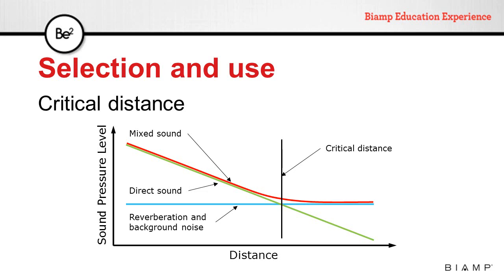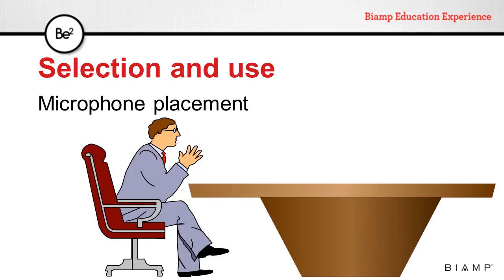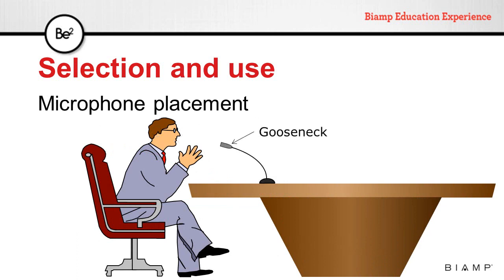If we place a microphone beyond the critical distance, it will only pick up noise. Taking distances into consideration, the best microphone we can pick is the headset — it's going to be the closest to the source and the farthest from the critical distance. If that's not a possibility, the next best choice is a gooseneck microphone, which will be a little farther from the source but still far from the critical distance. Pointing the microphone in the right direction is critical.